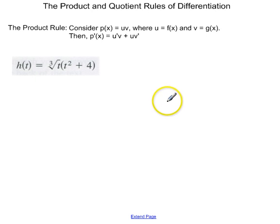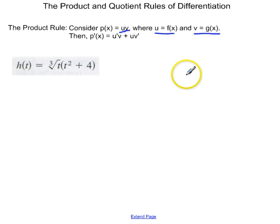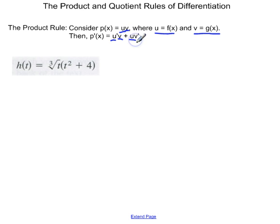The product and quotient rules are differentiation techniques. We're going to look at the product rule first. If I've got some expression that is two functions multiplied together, u times v, where u is some function in terms of x and v is some function in terms of the same variable x, then the derivative is the derivative of the first factor times the second plus the first factor times the derivative of the second. So let's apply it to this function right here.